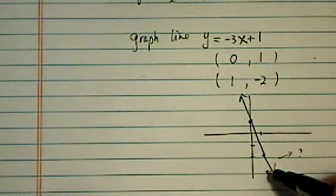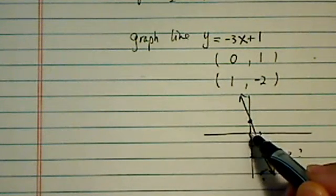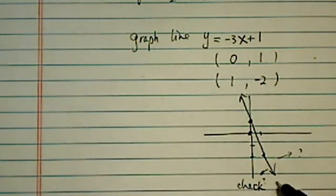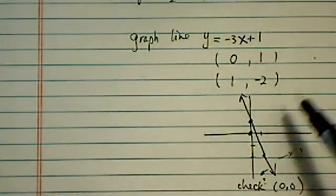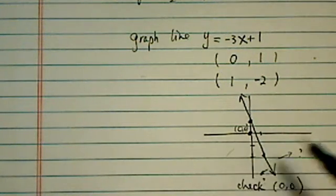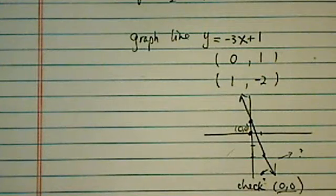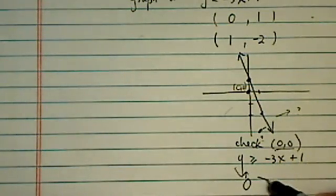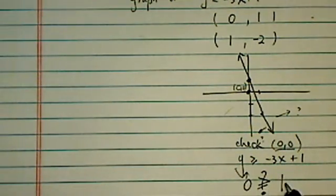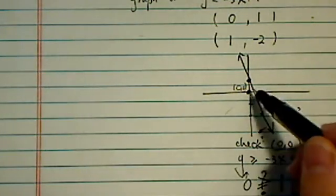Now, whether to shade this half or this half, the quickest way to check is check (0,0). This line cuts the graph in half. I'm either on this half or this half. This half doesn't have (0,0) in there, and this half does. So I want to check if (0,0) fits in my inequality. My original inequality says y > -3x + 1. So is it true when y = 0? Is it true that 0 > -3(0) + 1, which equals 1? Is 0 > 1? The answer is no, so I don't want (0,0) included in my solution set, therefore I'm going to shade this half.